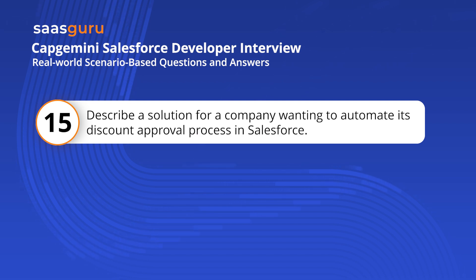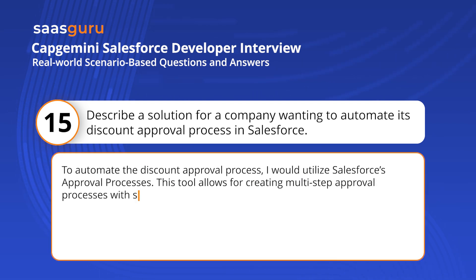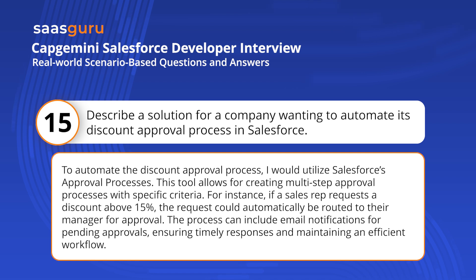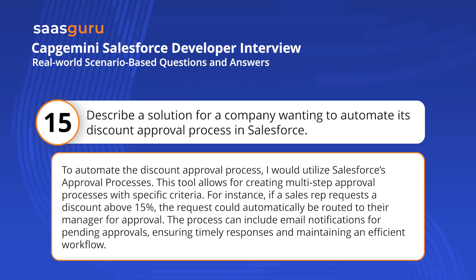Describe a solution for a company wanting to automate its discount approval process in Salesforce. To automate the discount approval process, I would utilize Salesforce's approval processes. This tool allows for creating multi-step approval processes with specific criteria. For instance, if a sales rep requests a discount above 15%, the request could automatically be routed to their manager for approval. The process can include email notifications for pending approvals, ensuring timely responses and maintaining an efficient workflow.